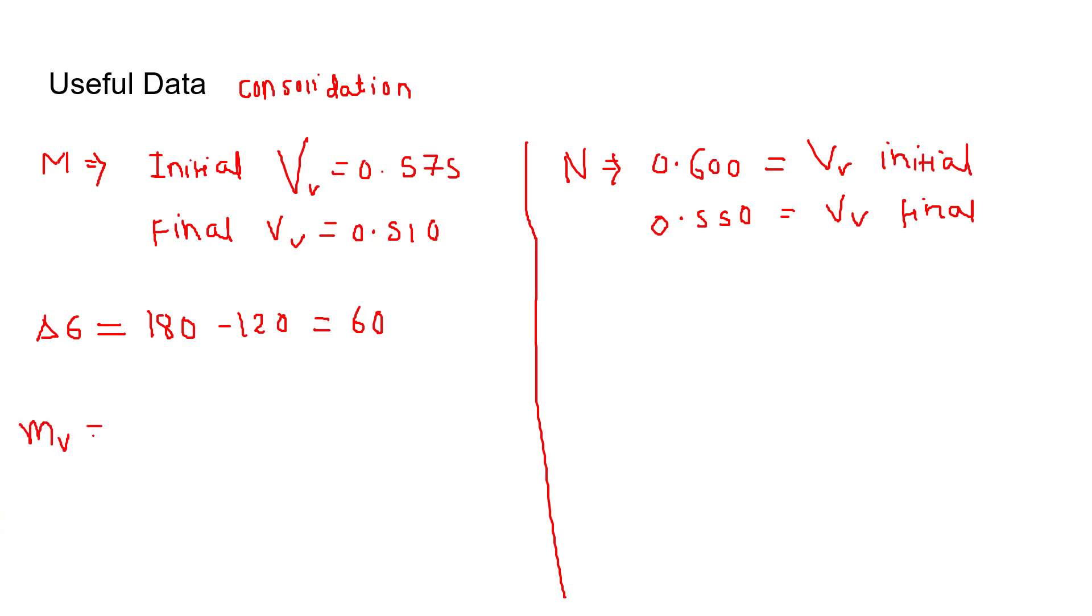So mv for sample M will be delta e upon (1 plus e naught) into 1 upon delta sigma effective. So it will be 0.575 minus 0.510 upon (1 plus 0.575)